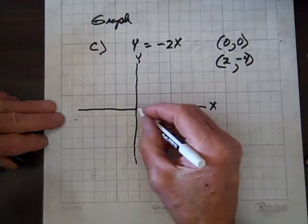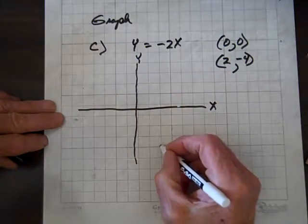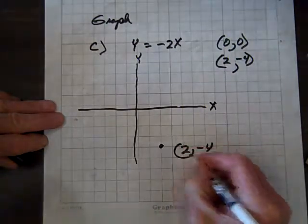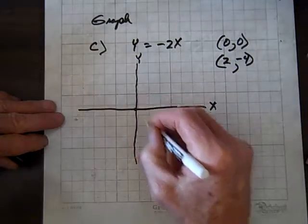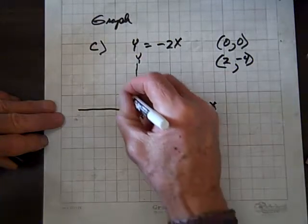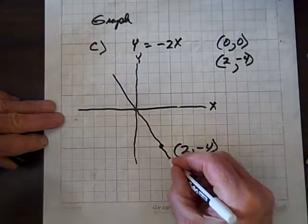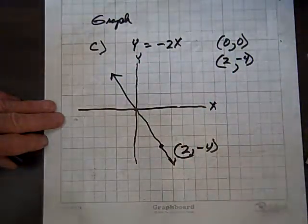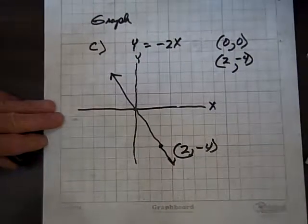So we're going to go over 2 and down 4. 2, negative 4. And here we are at zero zero. And so we graphed it. 2, negative 4. And I think we've covered our bases on that one. We're done.